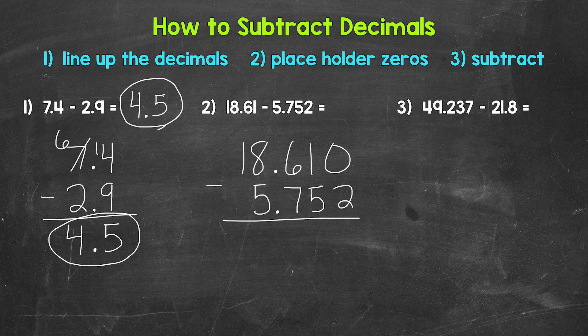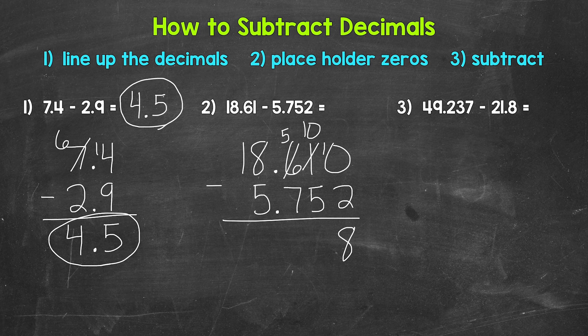Now that we've lined up the decimals and used a placeholder zero, we can subtract. Let's start with the thousandths place: we have zero minus two, which we need to borrow. So we borrow from the one — this is now zero — and now we have 10 minus two, which gives us eight. Then we have zero minus five, so we need to borrow again, and we end up with 10 minus five, which gives us five. Then we have five minus seven — we need to borrow again — and now we have 15 minus seven, which gives us eight.